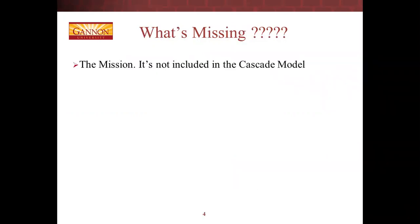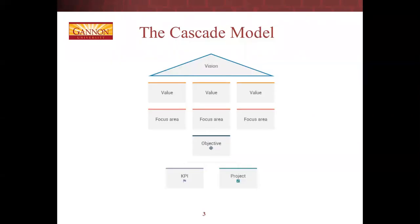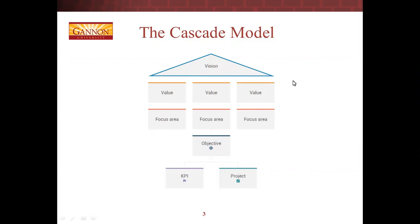The only thing I find missing from the cascade model is the mission. We have vision, values, focus areas, objectives, KPIs, and project KPIs — KPIs of course being key performance indicators. I have recordings on all of these elements and go into more detail starting at the focus areas, primarily because the organizations chosen for our project will have already established missions, visions, and to some degree values. There is also additional reading in the model itself, which is in PDF form.